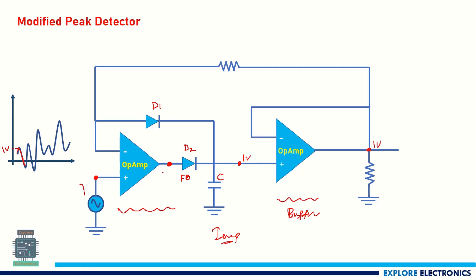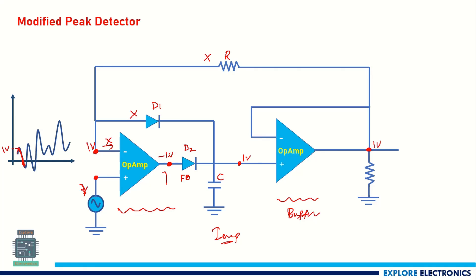Now the input voltage is reducing. Since it is a voltage follower the input to the second stage also reduces. At this stage, diode D1 is reverse biased, so there is no current flowing through the diode and no input current into the op-amp, meaning there is no current flow through the resistor either. Therefore 1 volt still appears as the input of the second op-amp. However, the output of the first op-amp has reduced, making the negative terminal at higher potential — the op-amp acts as a non-inverting amplifier producing a negative output. So diode D2 becomes reverse biased and diode D1 becomes forward biased, providing the negative feedback path. The capacitor holds its 1 volt since there is no path to discharge.